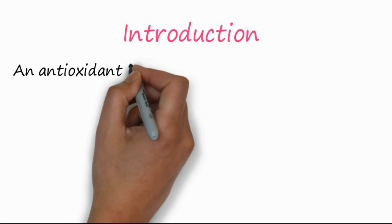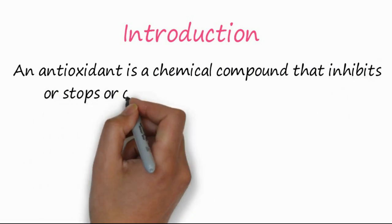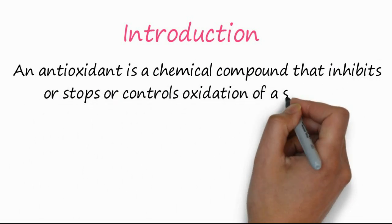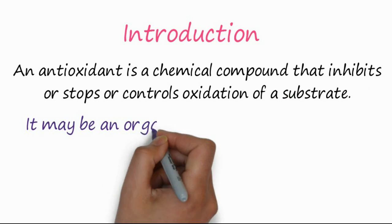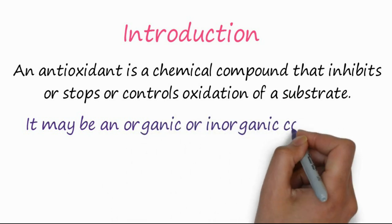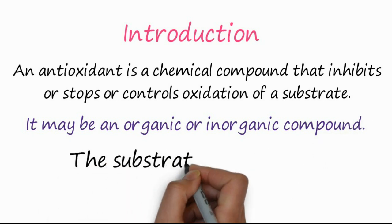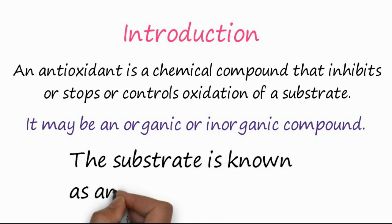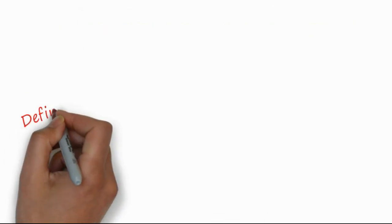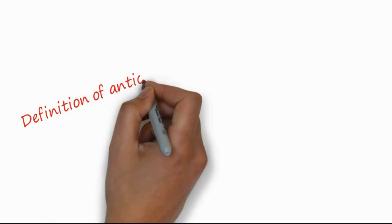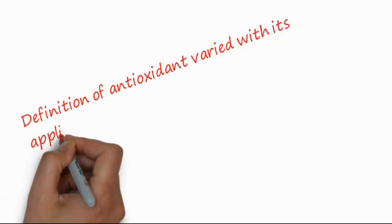Introduction: an antioxidant is a chemical compound that inhibits, stops, or controls oxidation of a substrate. It may be organic or inorganic in nature, so it may come from both biological and non-biological species. The substrate is known as an oxidizable substrate and it may be anything. Our definition of antioxidant varies with its application.